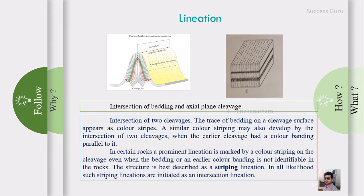The next example is the intersection of any two cleavages - bedding planes, cleavage surfaces, or other surfaces. The trace of bedding on a cleavage surface appears as a colored stripe. A similar color stripe may also develop by the intersection of two cleavages when an earlier cleavage had colored banding parallel to it. In certain rocks, a prominent lineation is marked by color striping on the cleavage, even when the bedding or earlier colored band is not identified. This structure is best described as striping lineation.